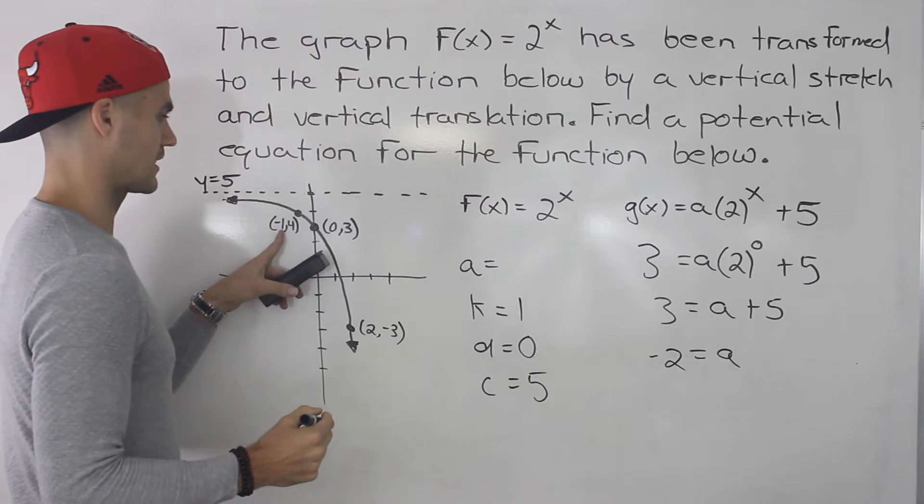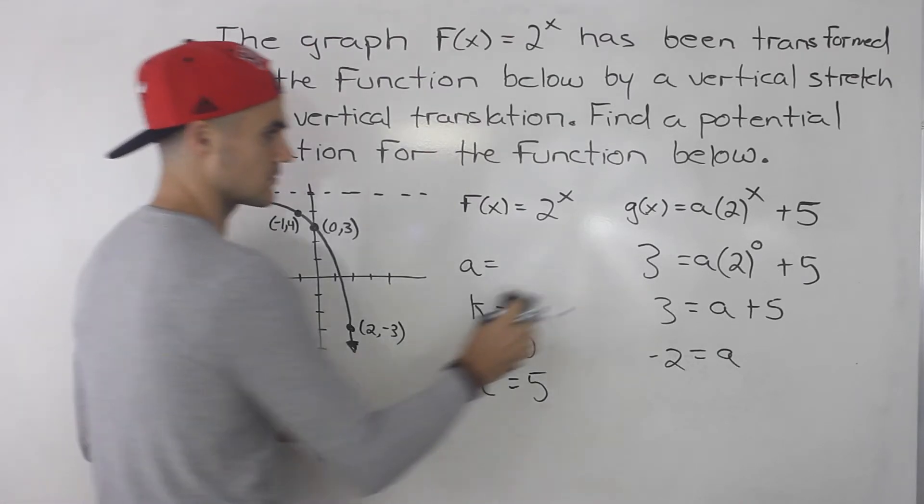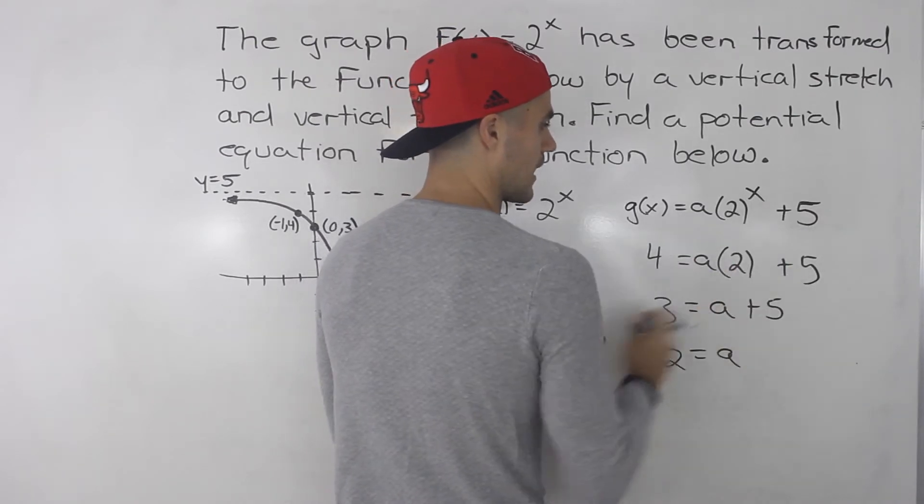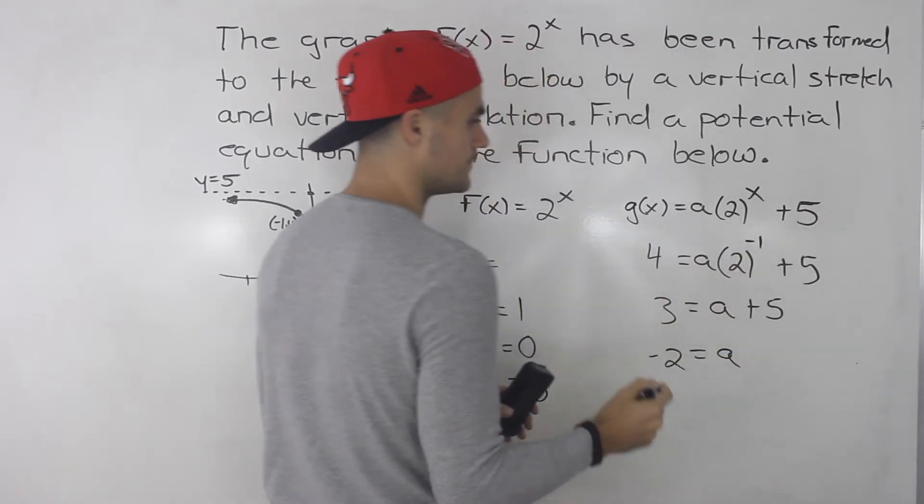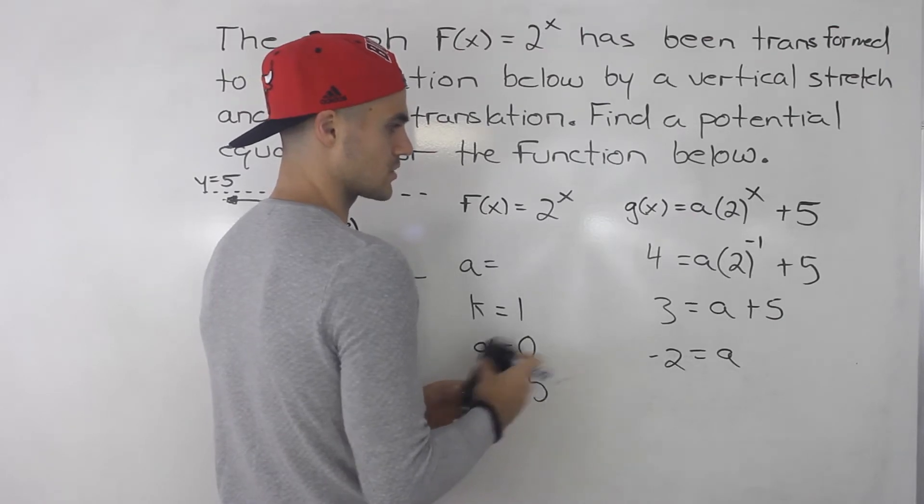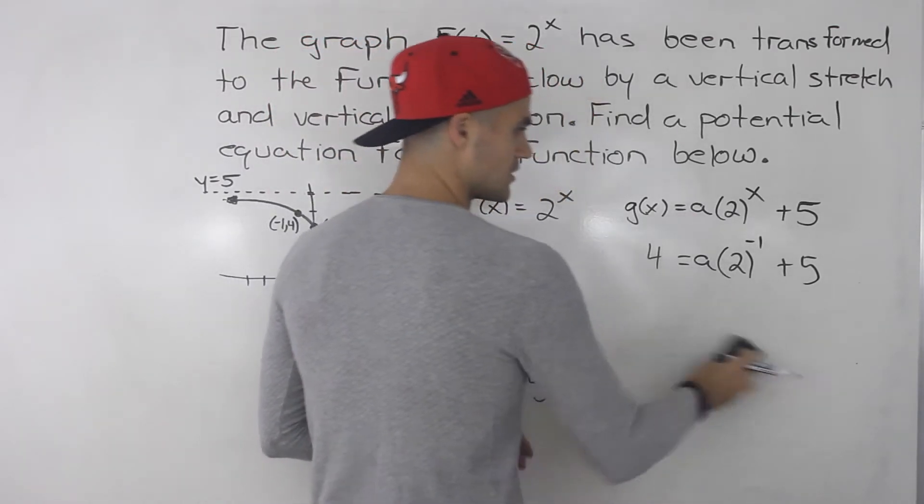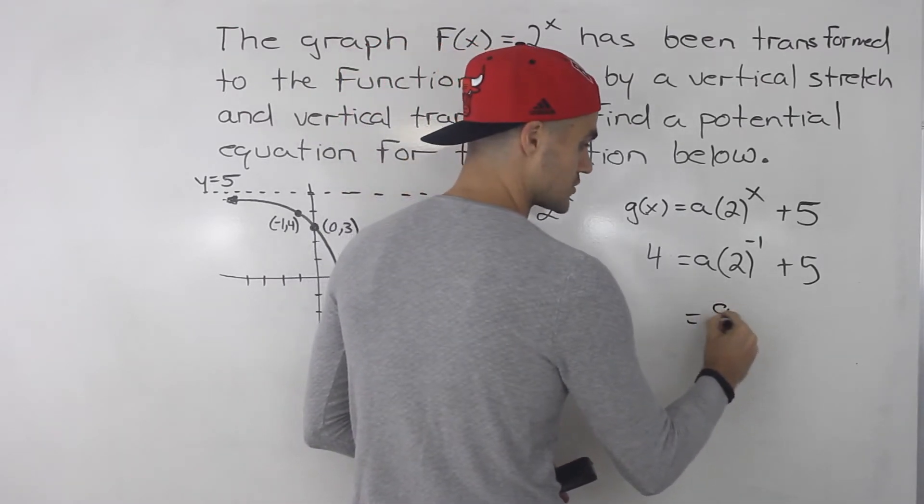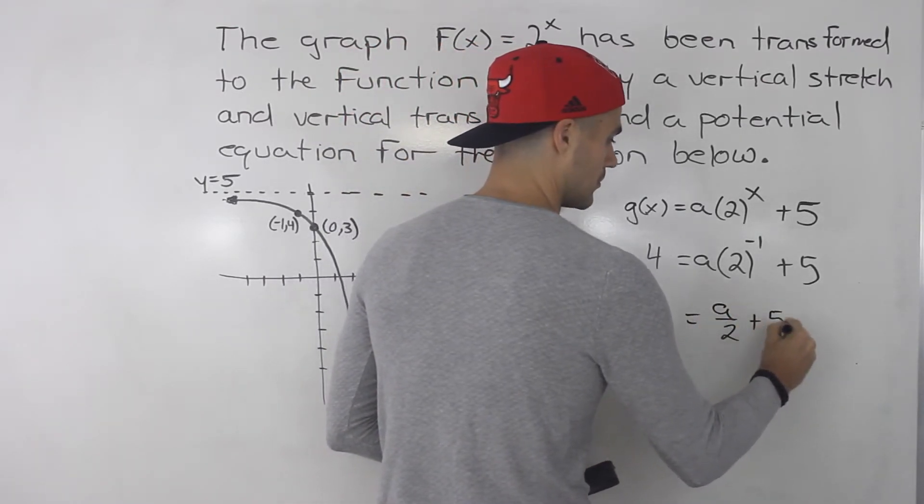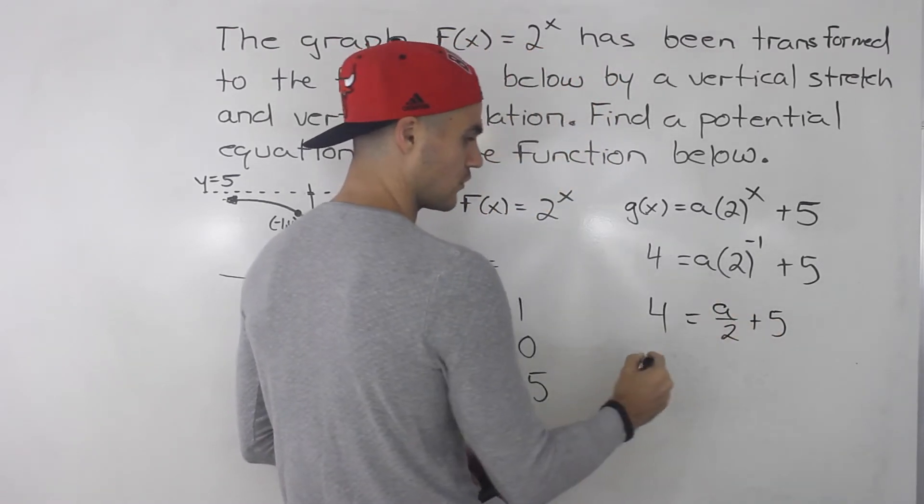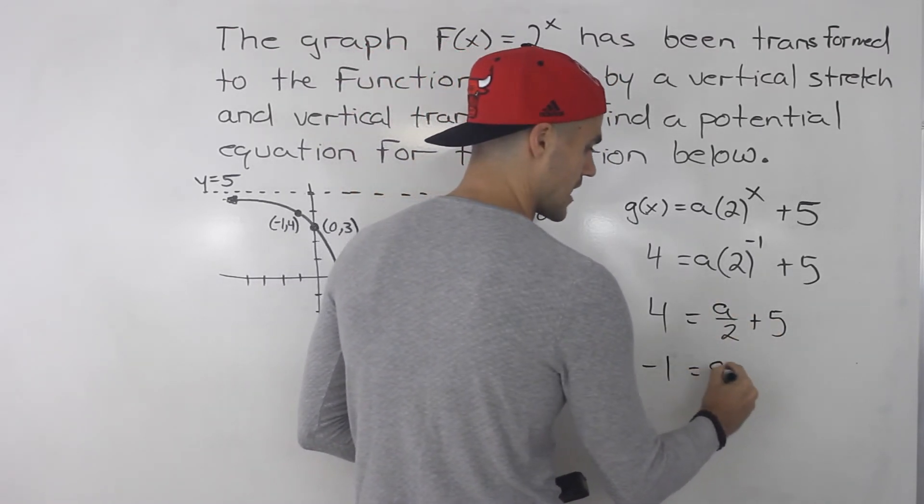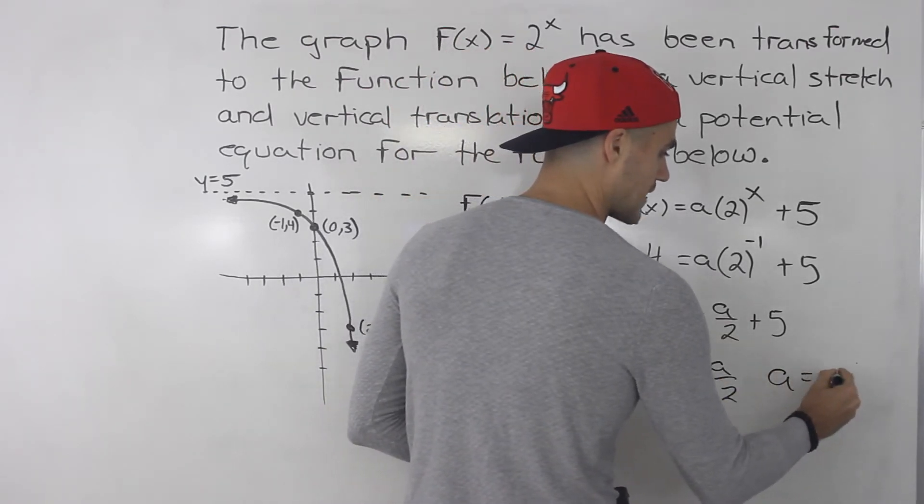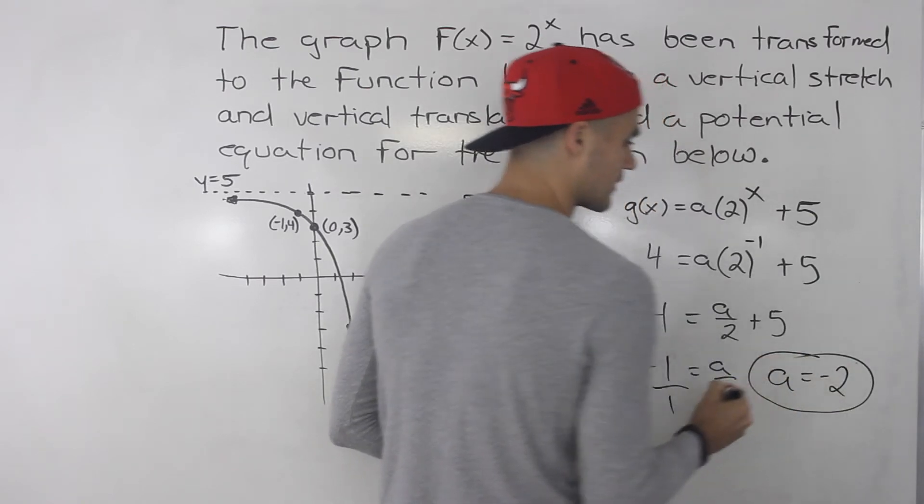What if we picked another point? What if we pick (-1, 4)? So we would plug in 4 over here, and then we would have -1. So what would happen then? Well, 2 to the power of -1, that's like 1 over 2, so we'd have a over 2 plus 5 equals 4. Bring the 5 over, so we'll have -1 equals a over 2. And then when we cross multiply and solve for a, we'll get that a value of -2 again.